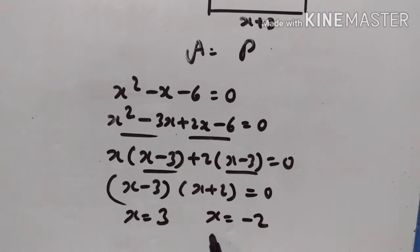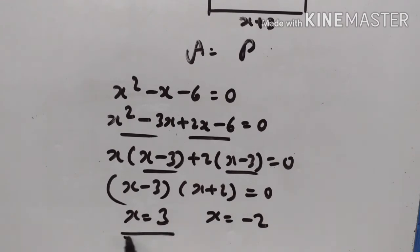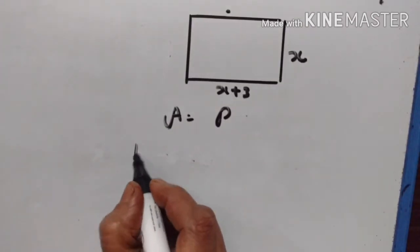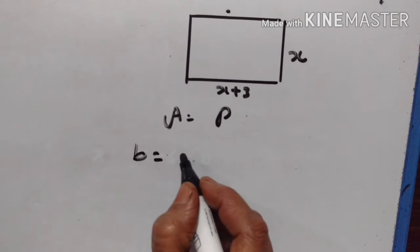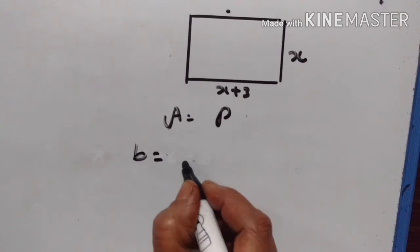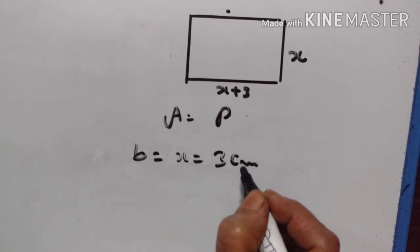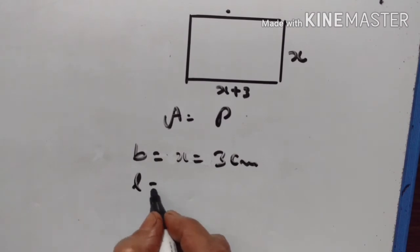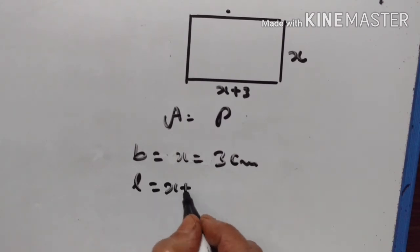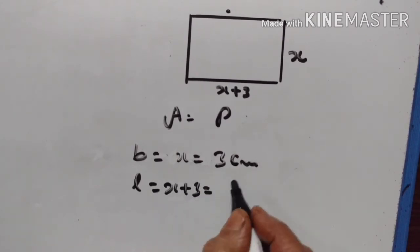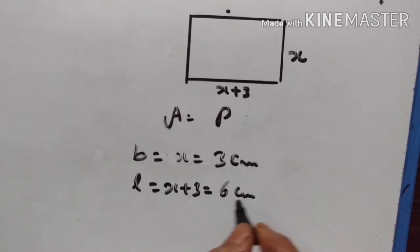Since x is the breadth, it cannot be negative. So the breadth is equal to x equals 3 meters, and the length is equal to x plus 3 equals 3 plus 3, which is 6 meters.